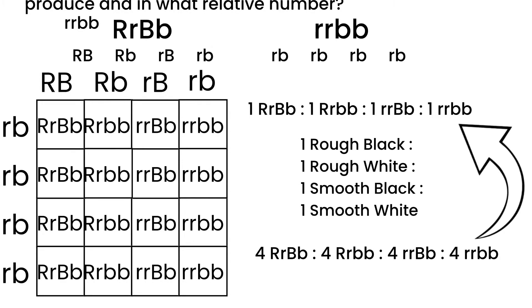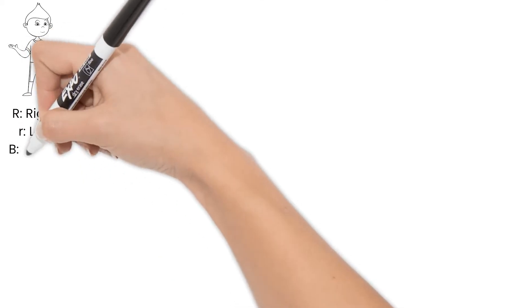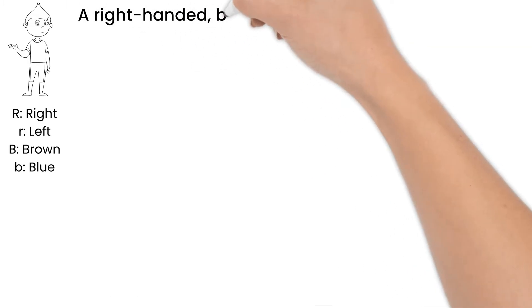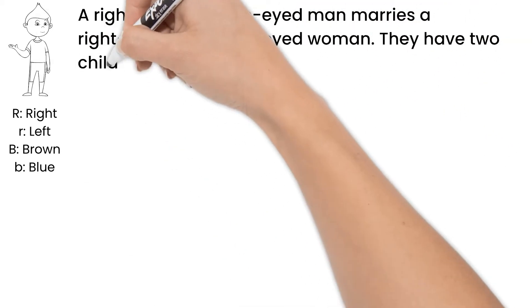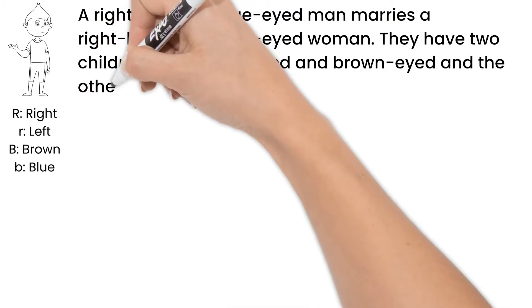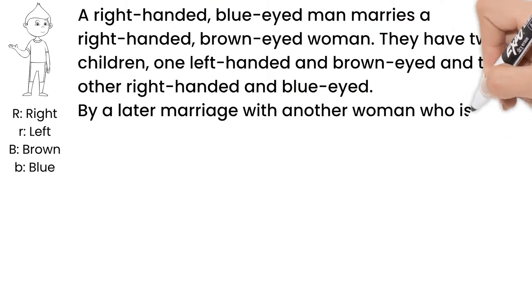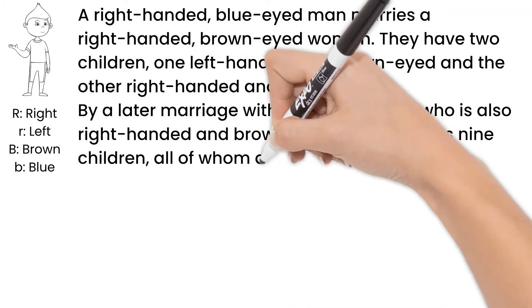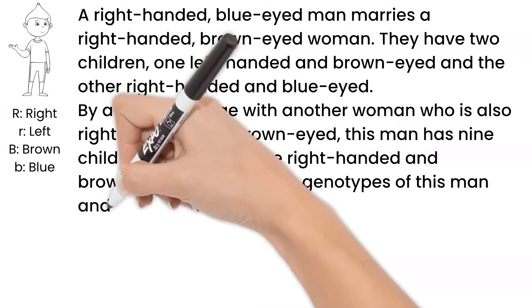Let's do one that's a bit trickier now, but incorporates both test-cross and dihybrid-cross type questions. Right-handedness is dominant to left, and brown eyes are dominant to blue. A right-handed blue-eyed man marries a right-handed brown-eyed woman. They have two children: one left-handed and brown-eyed, and the other right-handed and blue-eyed. By a later marriage with another woman who is also right-handed and brown-eyed, this man has nine children, all of whom are right-handed and brown-eyed. What are the genotypes of this man and his two wives?